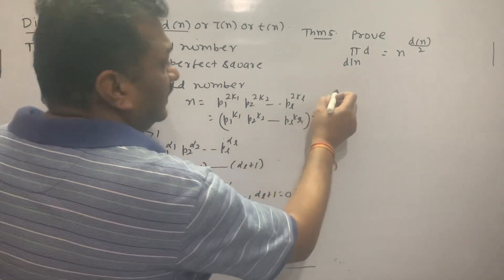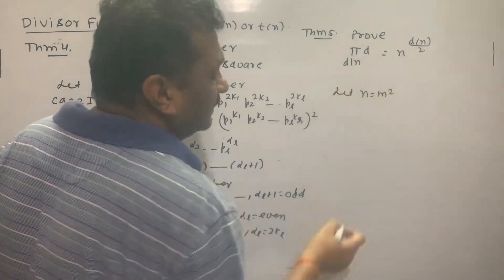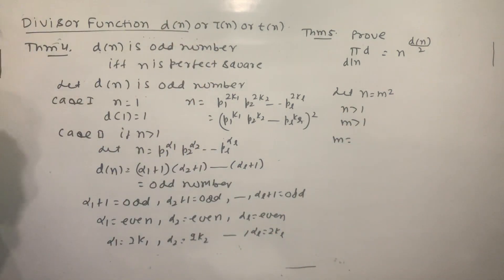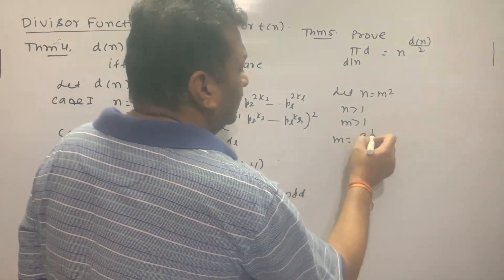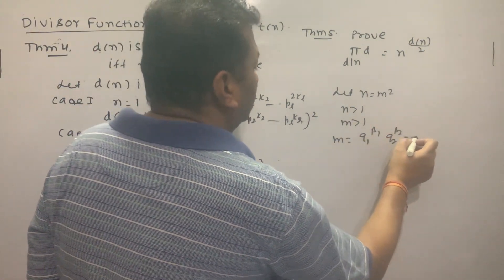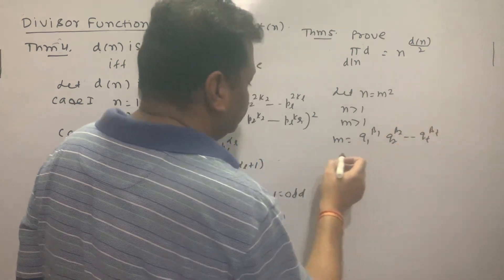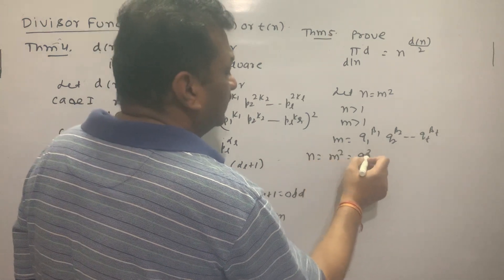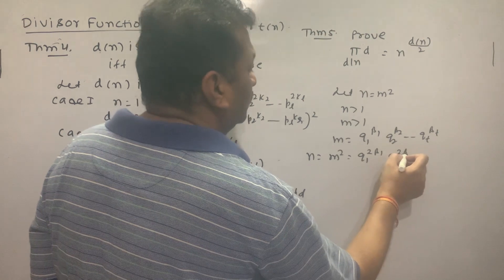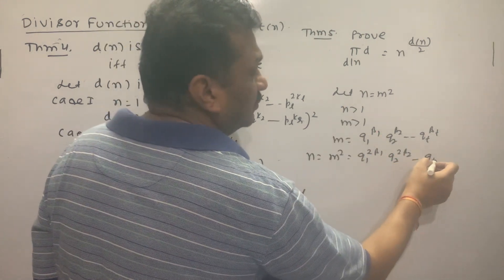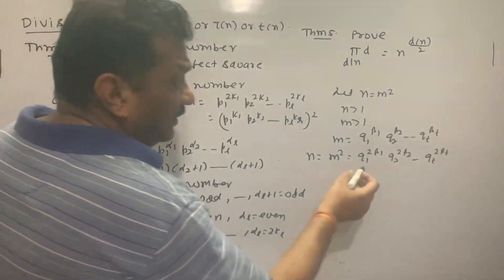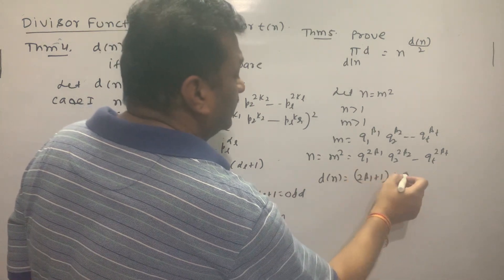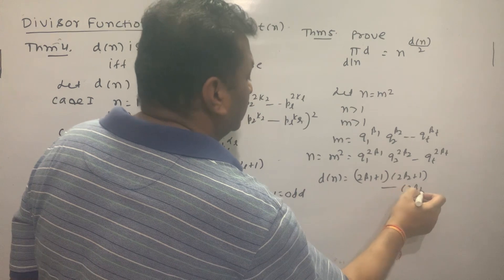Conversely, let n equal to m², a perfect square. Since n is greater than 1, m is greater than 1. Let m equal to q₁^β₁ · q₂^β₂ · ... · qₜ^βₜ. Then n = q₁^(2β₁) · q₂^(2β₂) · ... · qₜ^(2βₜ). So d(n) equals (2β₁ + 1)(2β₂ + 1)·...·(2βₜ + 1).